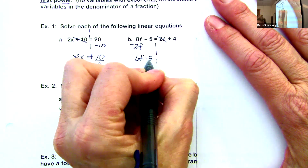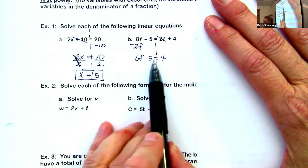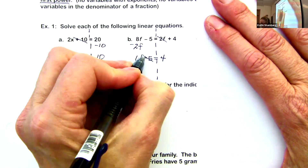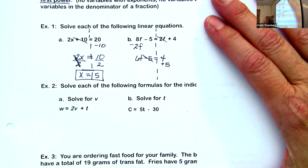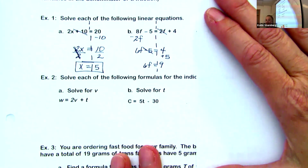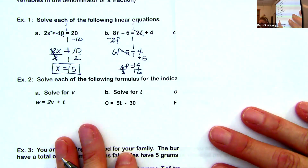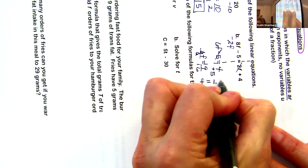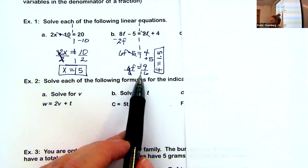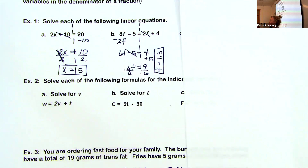Now we have 6f minus 5 equals positive 4. I want to move the 5 first — it's being subtracted, so I do its opposite and add 5. Then I'm left with 6f equals 9. To undo 6 times f, I divide by 6. f equals 1.5. You can go to your calculator, alpha y equals, put in 9 divided by 6, and get 1.5 — remember we set our calculator to give answers in decimal form.